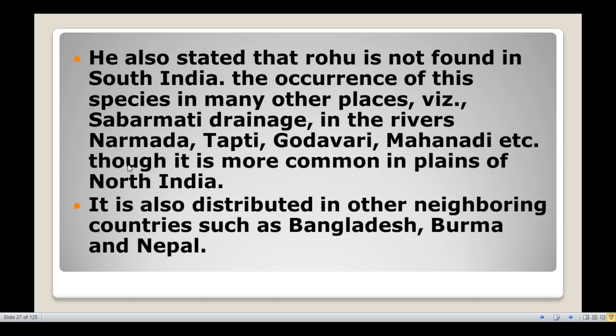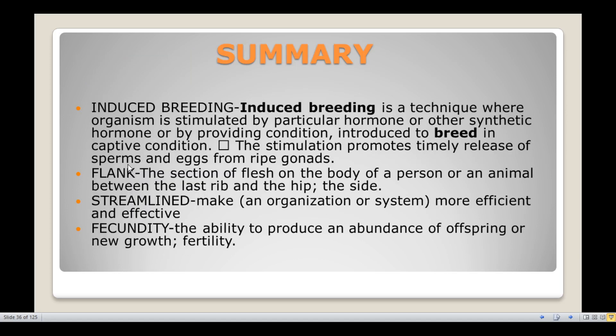It is also distributed in other neighboring countries such as Bangladesh, Burma, and Nepal. This is all about the Indian major carps — Katla, Cirrhinus mrigala, and Labeo rohita. Thank you.